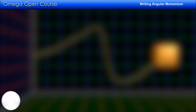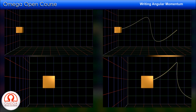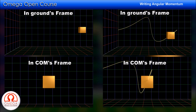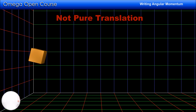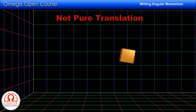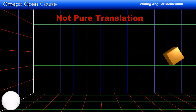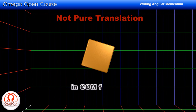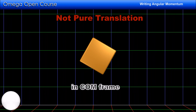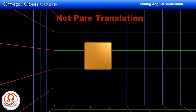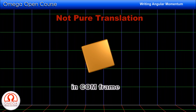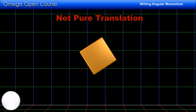In both these cases, if you look at the block from the frame moving with the center of mass of the block, you will find the block to be at rest. But if it is moving such that its orientation is changing, then the body is not in pure translation. As you can see in this case, when seen from the frame moving with the center of mass of the body, the body appears to be rotating. So different points on the body are moving with respect to the center of mass, which implies all points do not have the same velocity and hence the motion is not pure translation.